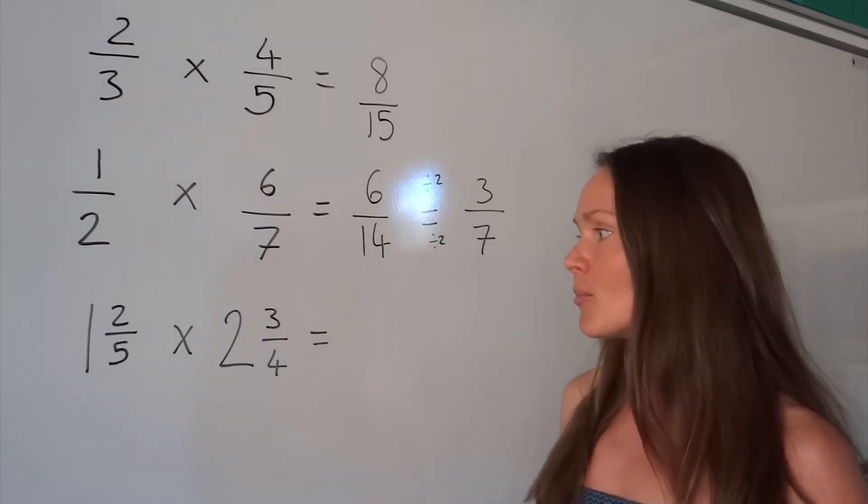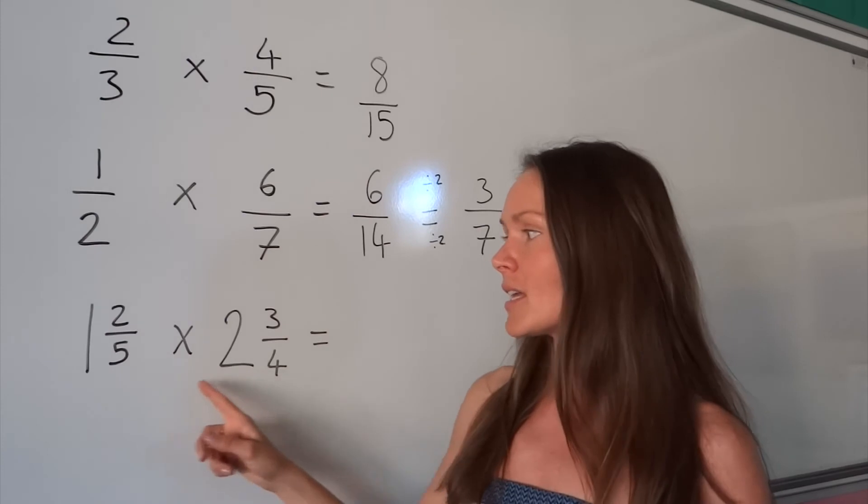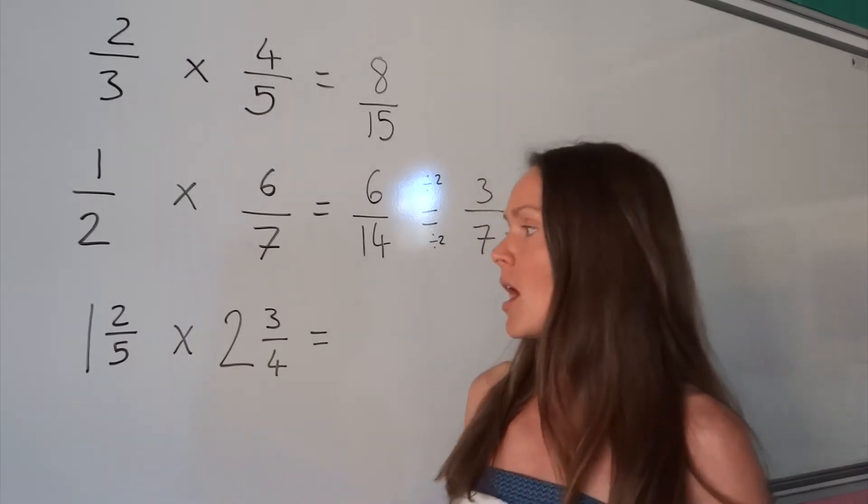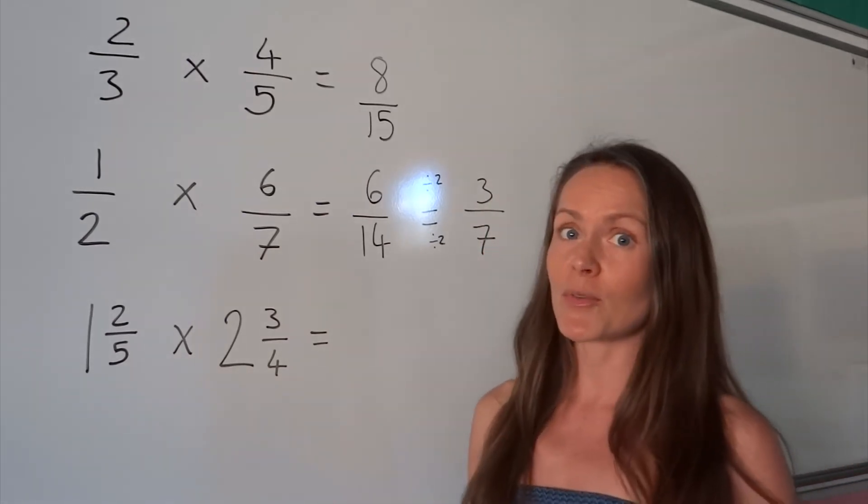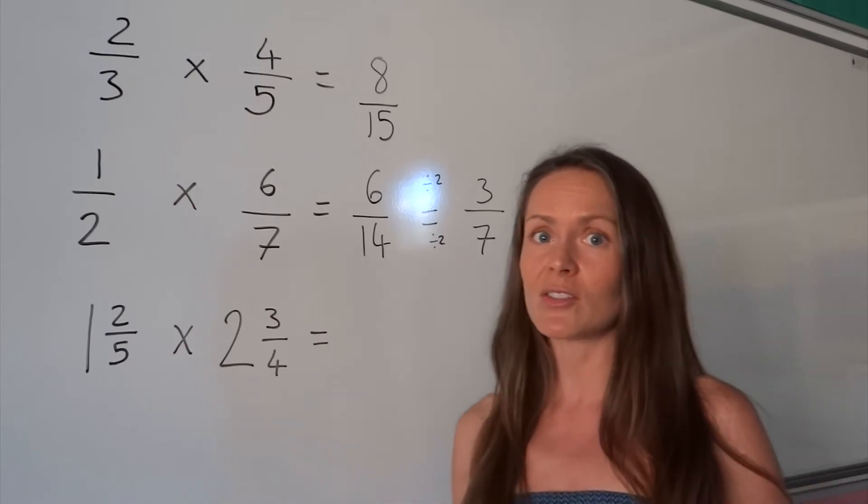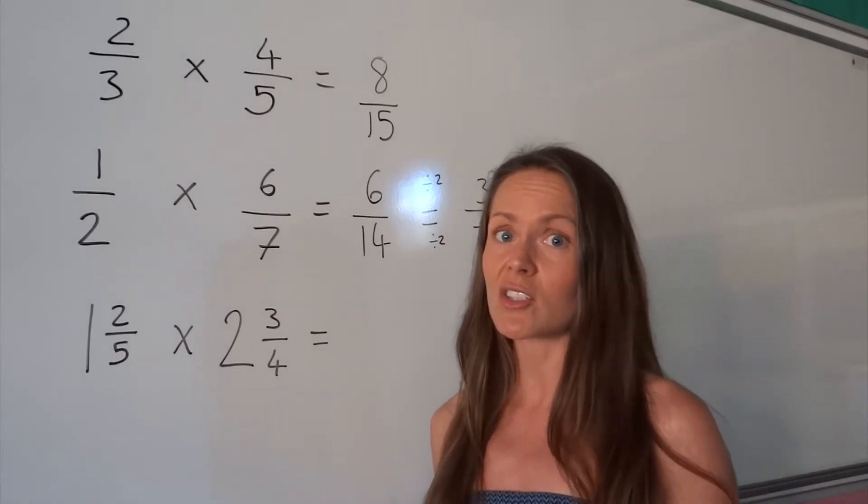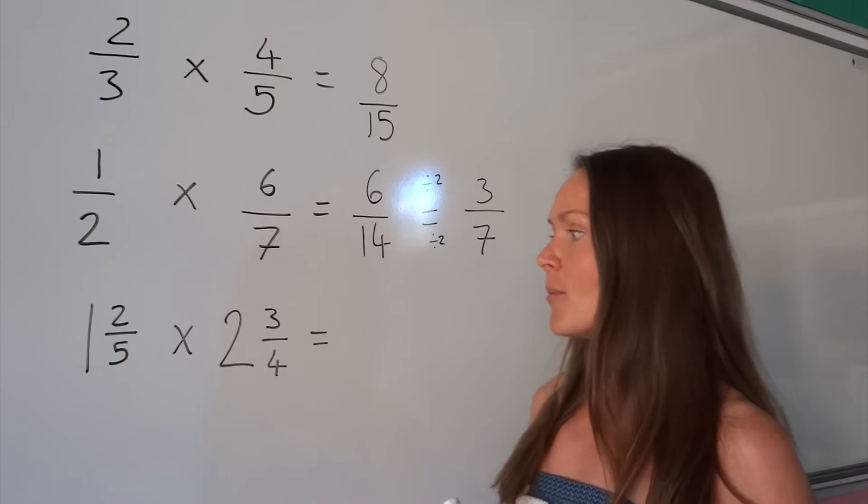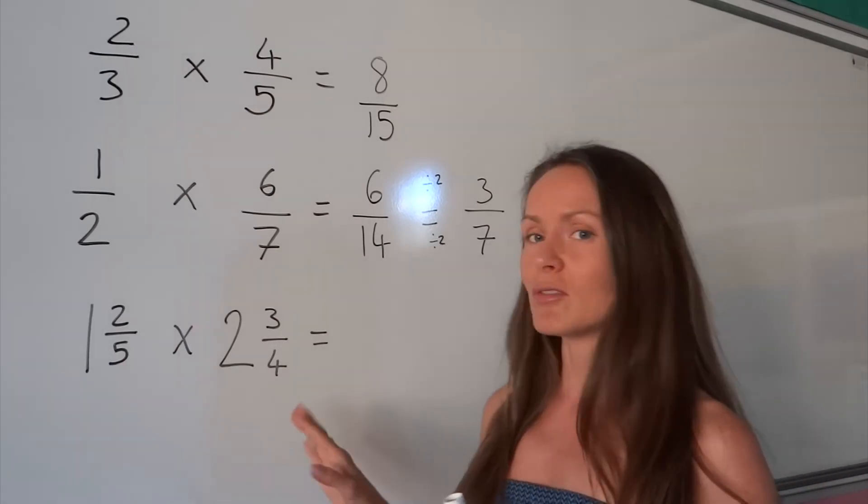In my last example, the numbers here are given as mixed numbers. I have to turn these into improper fractions first. If you're not sure how to turn mixed numbers into improper fractions, then you can look at the other video. But for the moment, I'll just presume that you know what to do.